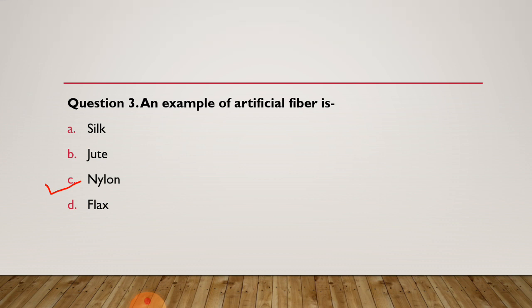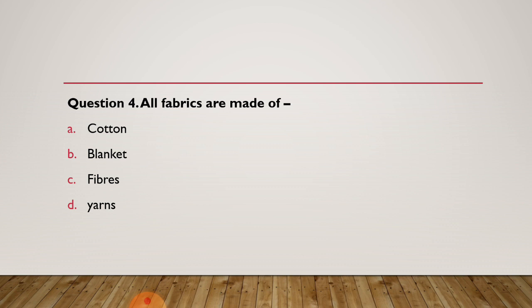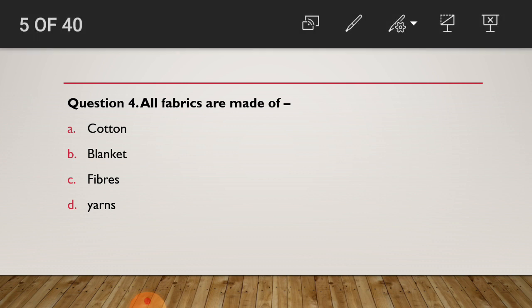You have read about this in the question answers of Chapter 4. Now moving to question 4: All fabrics are made of — a) cotton, b) blankets, c) fibers, or d) yarns. Have you chosen your answer? The right answer of question 4 is: all fabrics are made of yarns. Is that your answer?